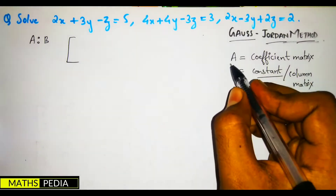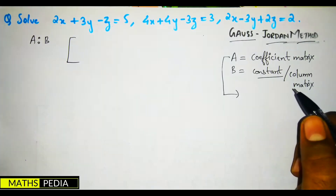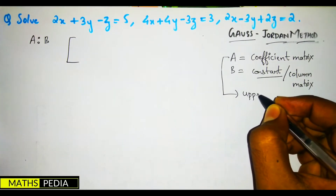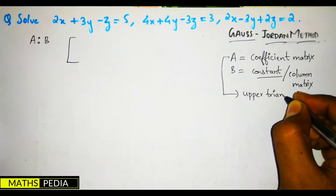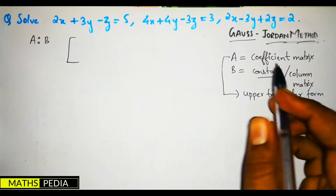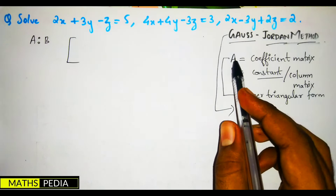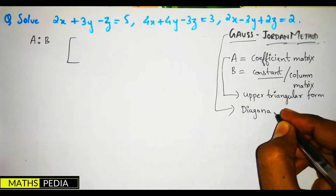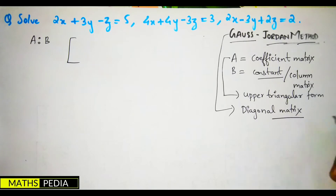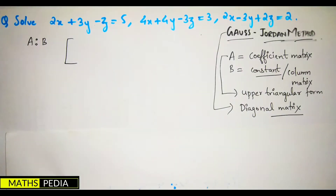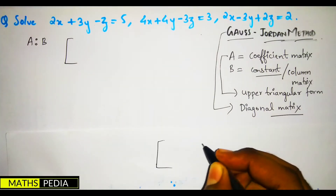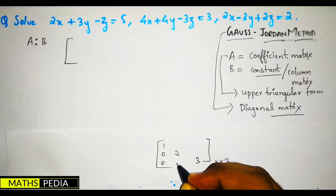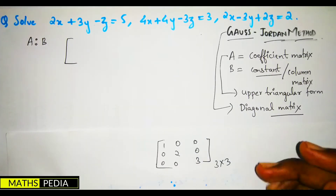Now, in Gauss elimination method we used to convert the coefficient matrix into upper triangular form. But in Gauss-Jordan method, you have to convert the coefficient matrix into a diagonal matrix. A diagonal matrix means — in a 3×3 square matrix — the diagonal elements are non-zero and all other non-diagonal elements are zero.